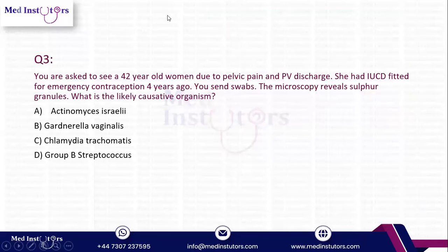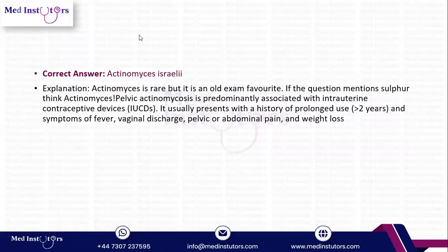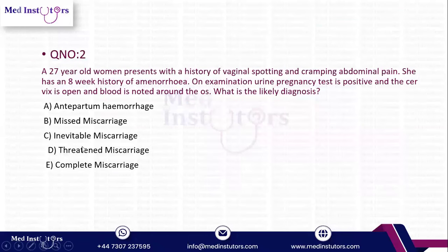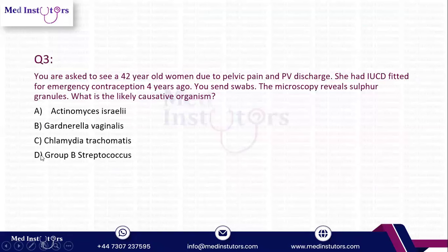The answer is inevitable miscarriage - it is not threatened miscarriage. Again, the keyword is: if the cervix is open and blood is noted around the os, it is inevitable miscarriage. If cardiac activity is present, the cervix is closed, and the patient only has vaginal spotting, then it is threatened miscarriage. These are the keywords you have to remember in the exam - these are what you use to pick the correct MCQ.